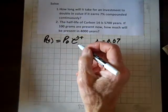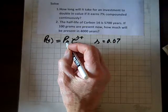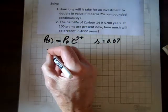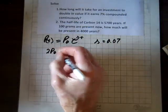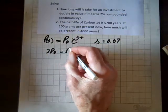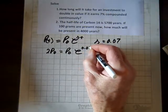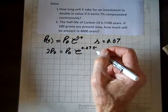7%. Well, look, if this thing's going to double in value, then we're going to double the initial amount. In other words, 2P sub 0 after so many years is going to equal P sub 0 e to the rate is 0.07t.